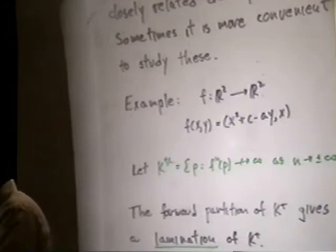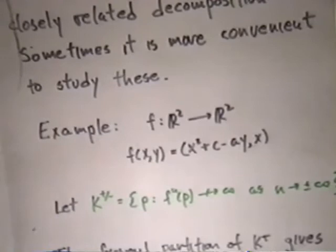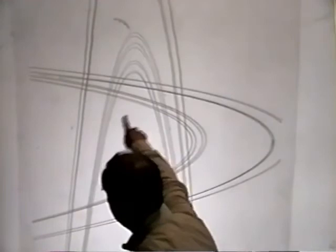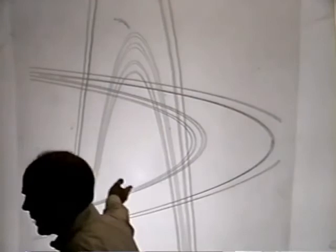Let me give you an example of a diffeomorphism. With a diffeomorphism, we're iterating, and we can talk about the partition based on forward asymptotic behavior. Here's the picture. The horizontal-looking lines correspond to points whose forward orbits are bounded. The vertical lines correspond to points whose orbits are bounded in backward time.